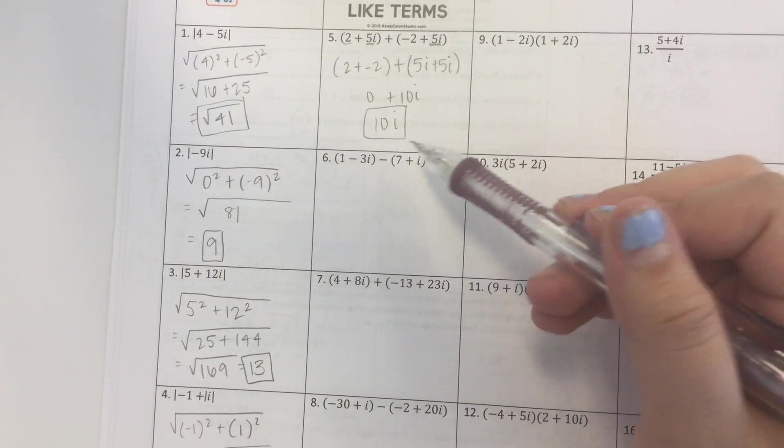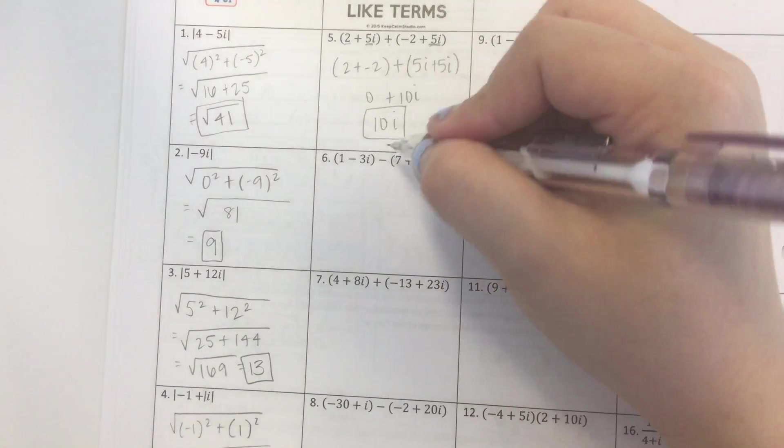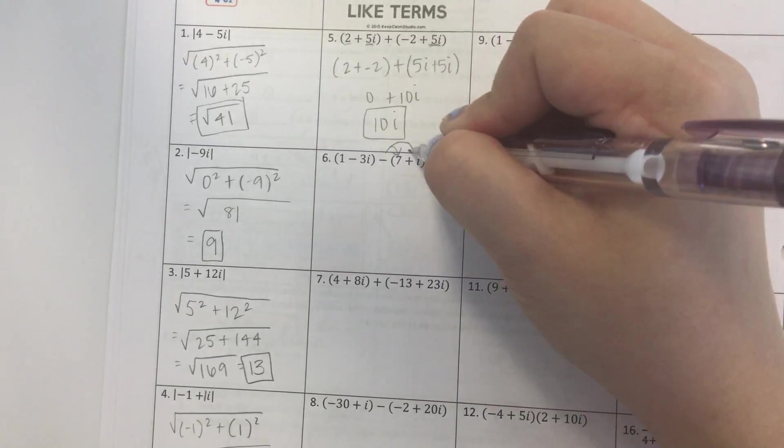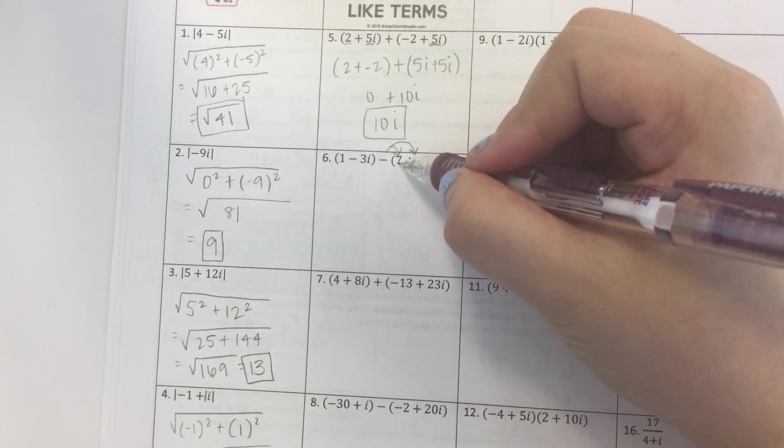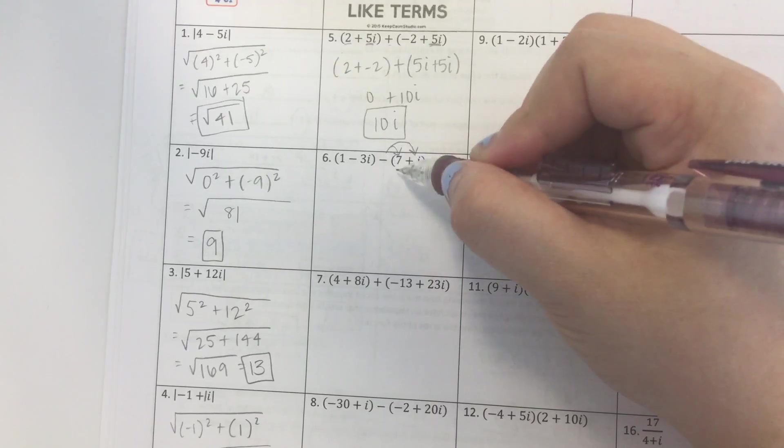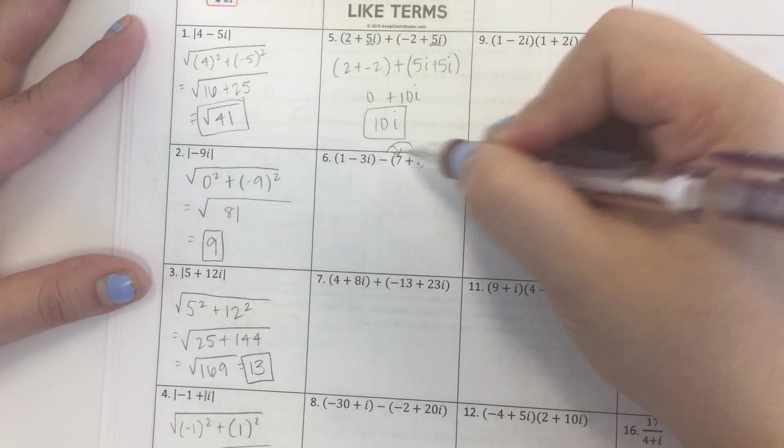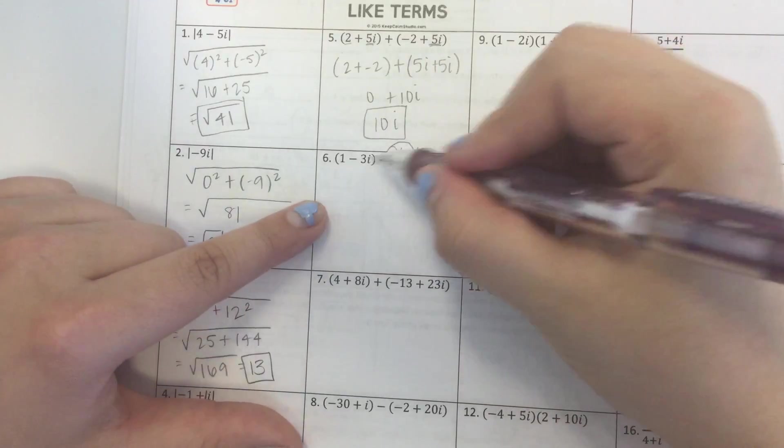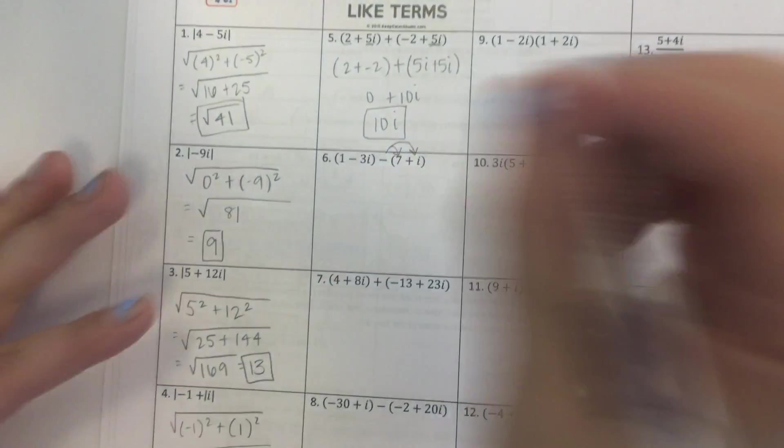Number 6 is a subtraction problem. When we have a subtraction problem, remember to distribute that minus sign. We're not just subtracting 7, we're subtracting this whole thing, which means you need to subtract 7 and subtract i. The easy way to do that is to distribute. We don't really need these parentheses here, so I'm just going to get rid of them.